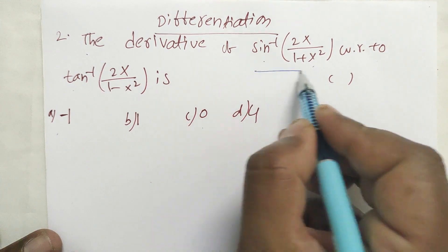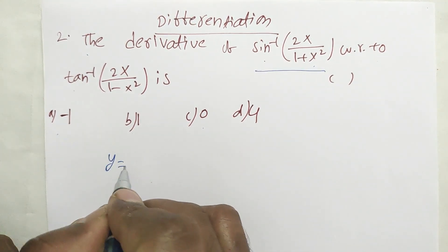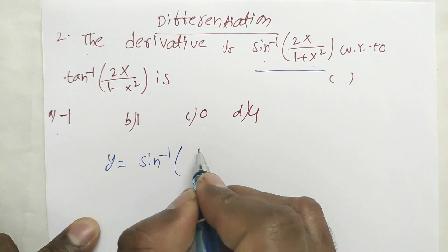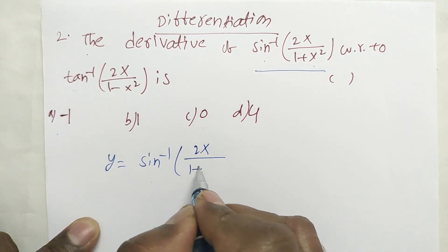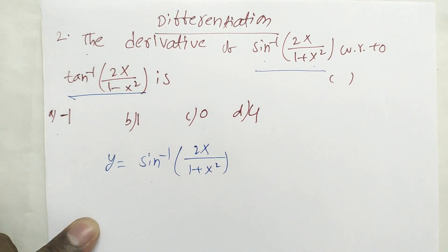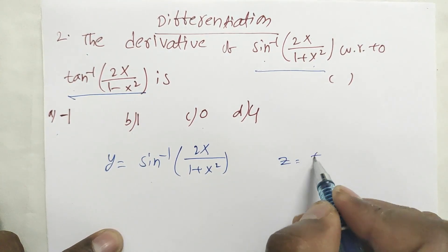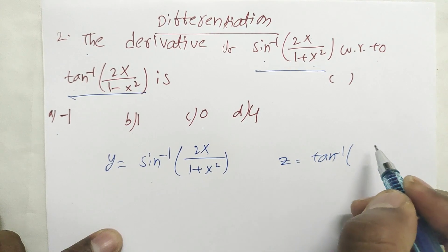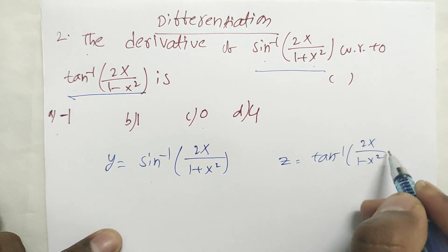Now, let Y = sin⁻¹(2x/(1+x²)), and let Z = tan⁻¹(2x/(1-x²)).